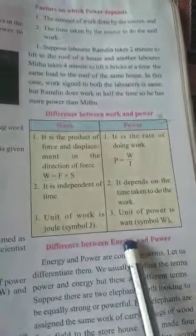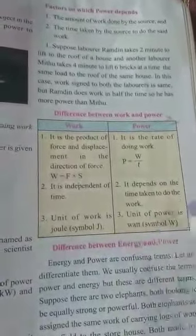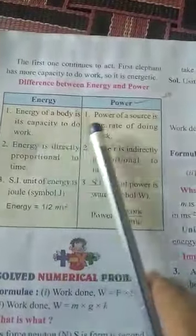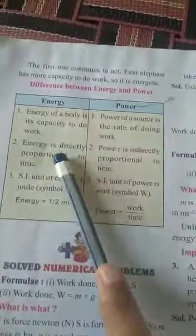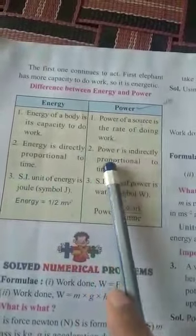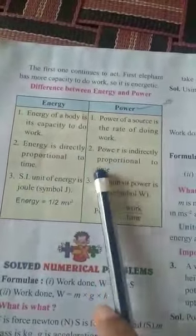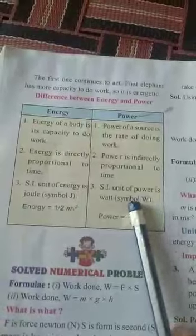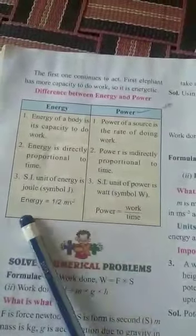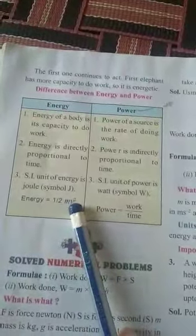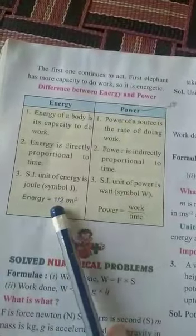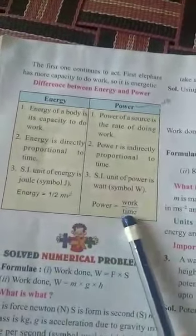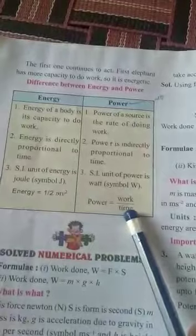Difference between energy and power, it is also very important concept. We know that energy of body is the capacity to do work, whereas power is the rate of doing work. Energy is directly proportional to time, and power is inversely proportional to time. Energy, the SI unit is joule, whereas SI unit of power is watt. The formula for energy is, for kinetic energy, it is half mV squared, for potential energy, it is mgh. Whereas power, power formula is work done upon time. That's all regarding the power.